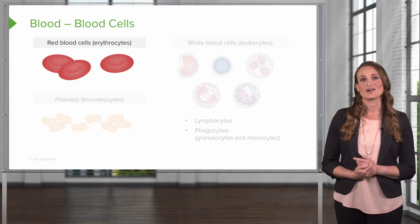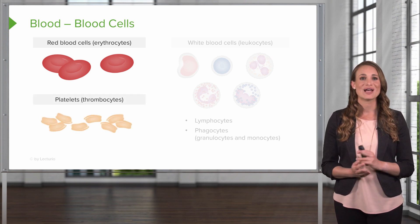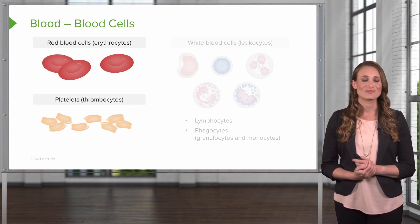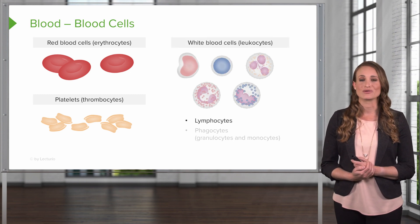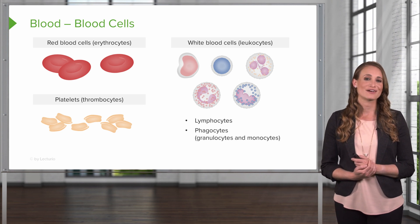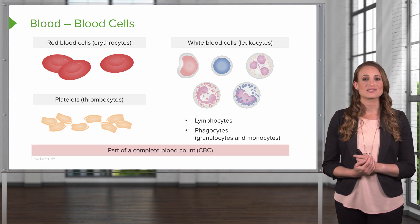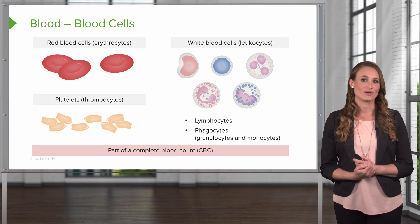Now let's look at the blood cells. The blood cells contain red blood cells, which are erythrocytes; platelets, which are thrombocytes; and white blood cells, which are your leukocytes. Within the leukocytes, we see lymphocytes and phagocytes, and these are granulocytes and monocytes. These are parts of the components of the complete blood count, or CBC.